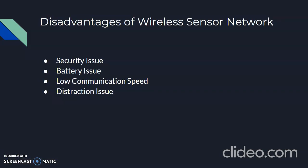Some disadvantages of wireless sensor networks: The first is the security issue — WSNs are less secure compared to wired networks and can be easily hacked. The second is the battery issue — nodes need to be charged at regular intervals and battery life is very low. The third is low communication speed — communication speed is comparatively very low compared to wired networks. The last is the distraction issue — wireless sensor networks keep getting disrupted by other wireless devices.